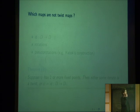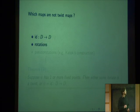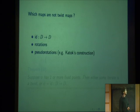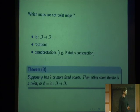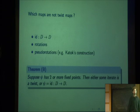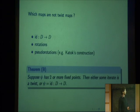Which maps are not twist maps? One obvious example is the identity and rotations. And of course, there are other constructions due to Katok where you have a single periodic orbit that's always a fixed point and somehow no other periodic orbits appear and there's no twisting. I'd like to claim that a result about pseudoholomorphic curves — which I still have to write down all the details — would say: assume the map has two or more fixed points. Then either some iterate has a twist, or it's just the identity map. So it's quite rigid.